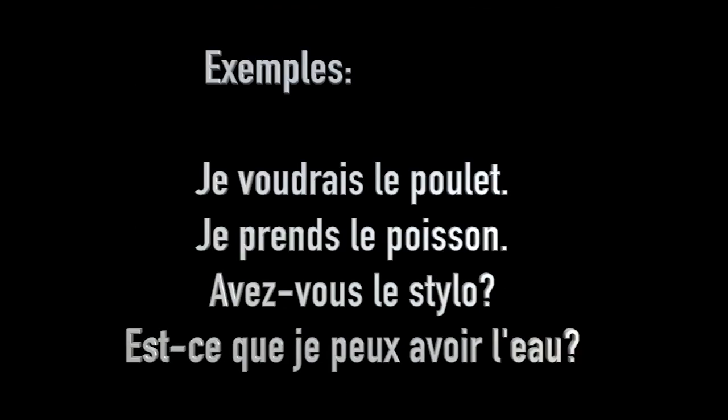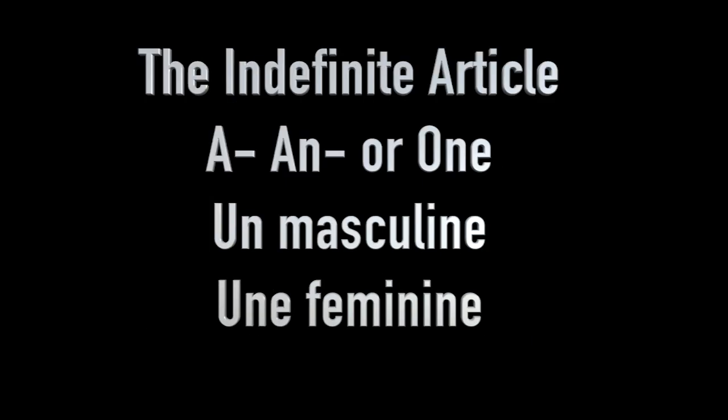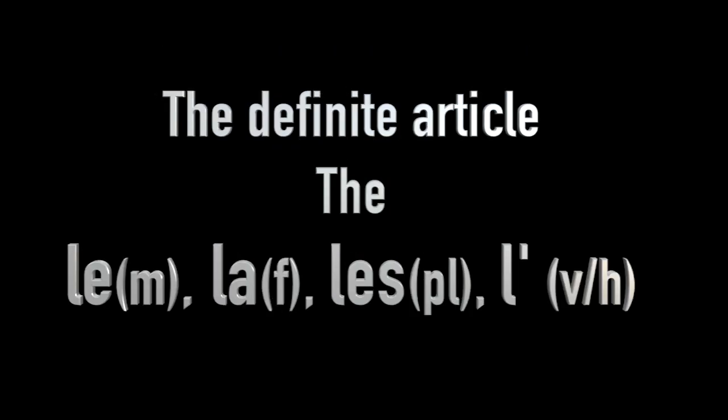So what we've done is put our questions and statements together with our definite article to get that sense of 'the'. We've had our indefinite article — a, an, or one — and we've now had our definite article, 'the'. The key thing to remember: there are four words for 'the' in French, and they all begin with L. 'Le' — masculine, as in gentleman. 'La' — as in lady. 'Les' — plural. And 'l'' apostrophe for those nouns that begin with a vowel or H, to make sure they flow — like 'l'aubergine' and 'l'ananas'.